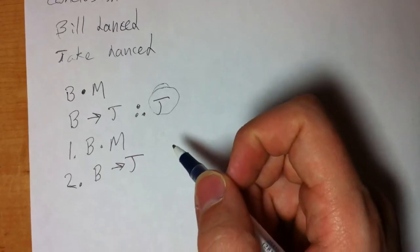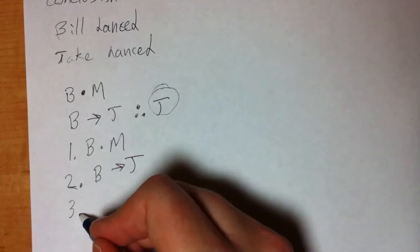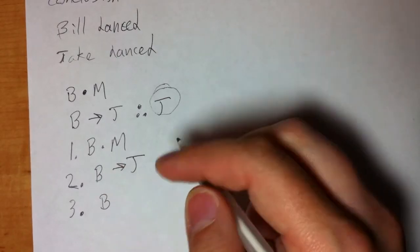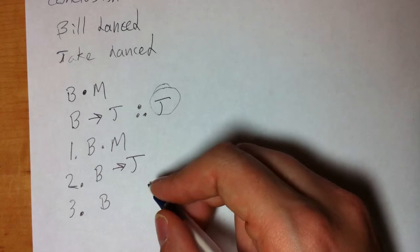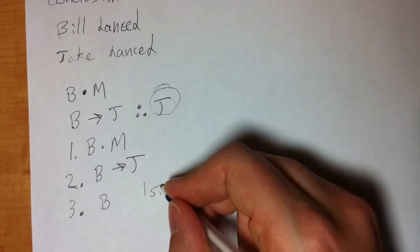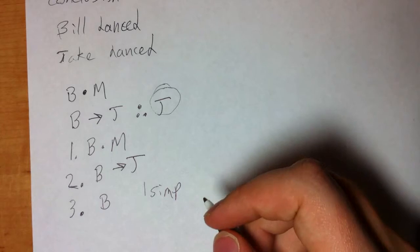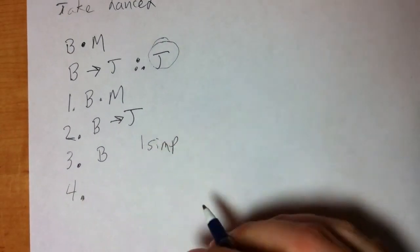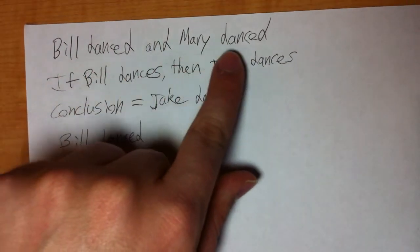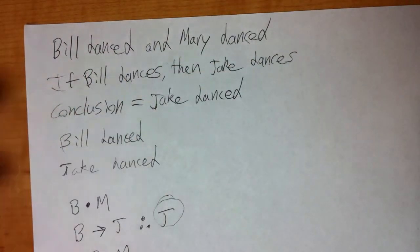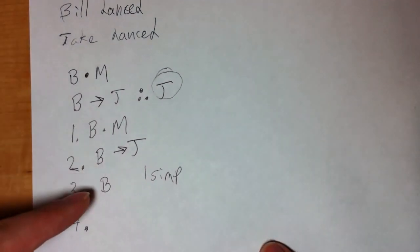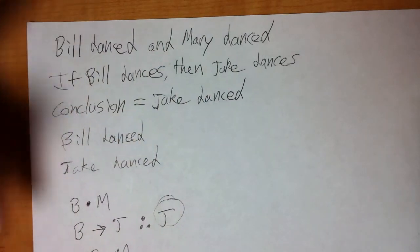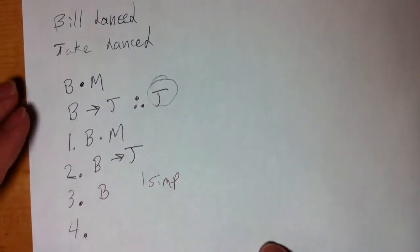We're going to talk in detail about these rules, but essentially this is what it would look like. I want to get to J. Well, I can get B from line one and a rule that we'll talk about later is called simplification. Line one, simplification. Just like up here, if I know that Bill danced and Mary danced, then I know that Bill danced—an assumption we make all the time. That's what that represents, but instead of just saying if I know this and that then I know this, we call it simplification and give it a fancy name.